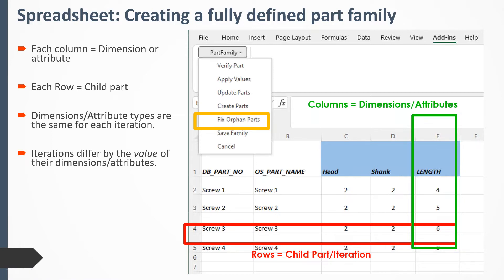To understand the setup and format of the part family spreadsheet: each row is an iteration or specific variation of your model — these are what we call the child parts that make up your part family. Each column is a different dimension or attribute. This is what makes the part family creation process possible, because each child part has the same attributes and dimensions, but what differs between them is the values of those dimensions. In this case, the child parts differ by their lengths — you can see how they increase with the different part numbers and part names.